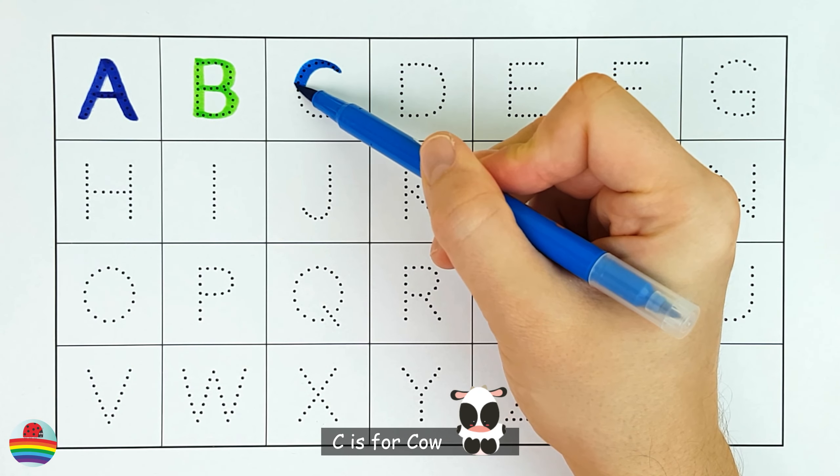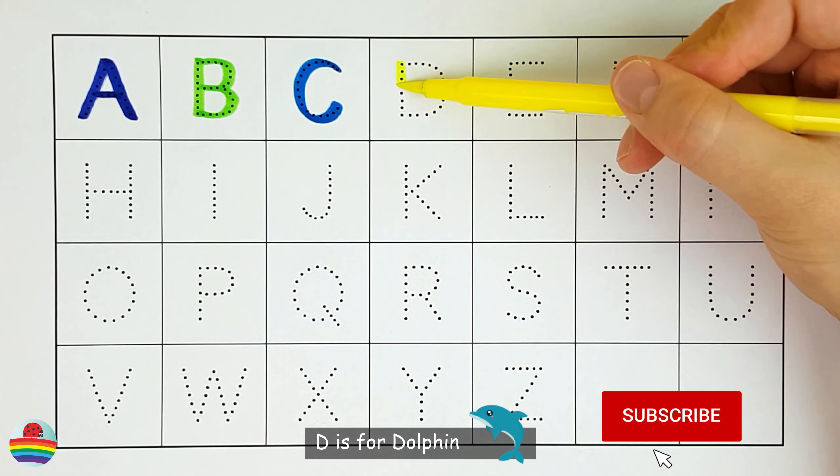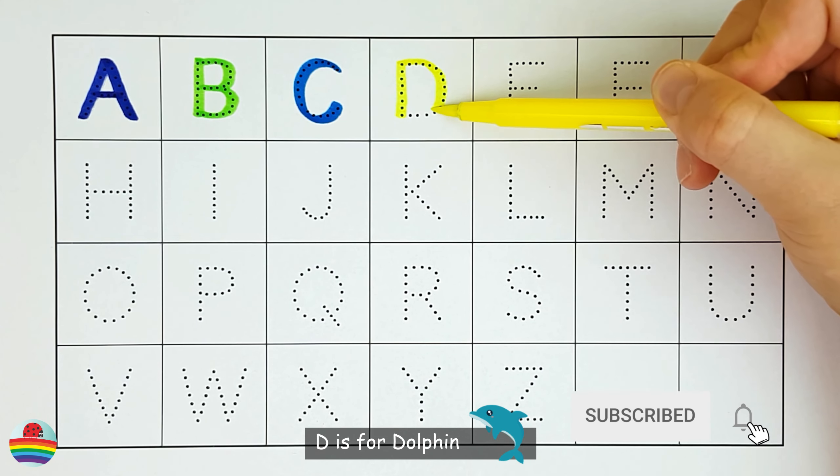C. C is for cow. C. D. D is for dolphin. D.